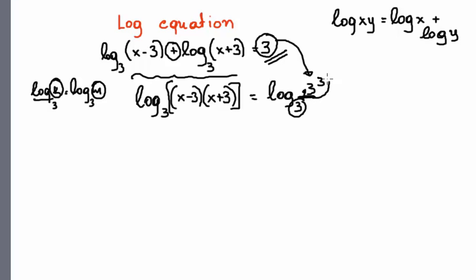So the argument of the right side will become 3 to the third. 3, the base, is the base of the logarithm. 3, the exponent, is the number that gives me the initial equation that is going to be the exponent of the logarithm.